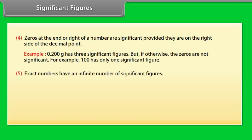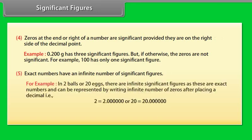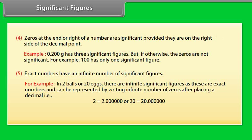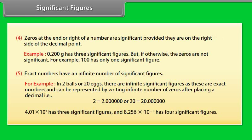Exact numbers have an infinite number of significant figures. For example, in two balls or 20 eggs there are infinite significant figures as these are exact numbers and can be represented by writing infinite number of zeros after placing a decimal. That is, 2 equals 2.0000 or 20 equals 20.0000. 4.01 × 10² has three significant figures and 8.256 × 10⁻³ has four significant figures.